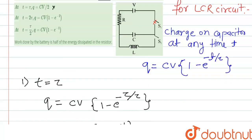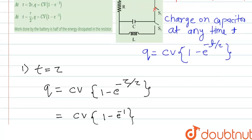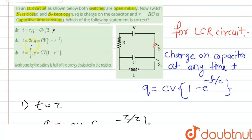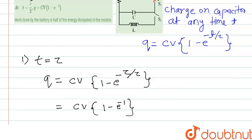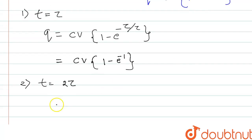So if we check for second one, for the second case we have to take T equal to 2 tau. So if we take T equal to 2 tau and using the same equation, in place of T we can write 2 tau divided by tau.